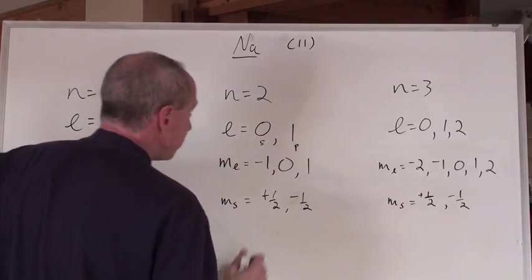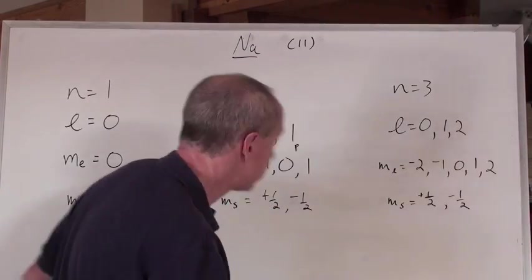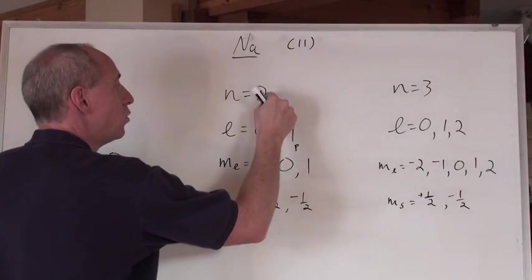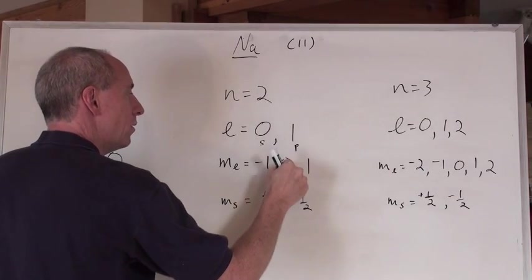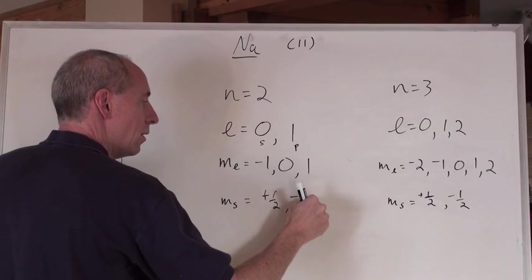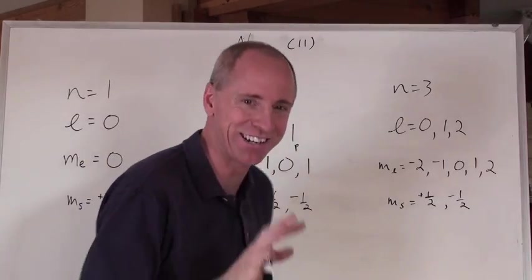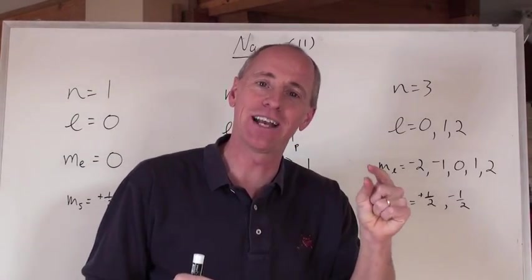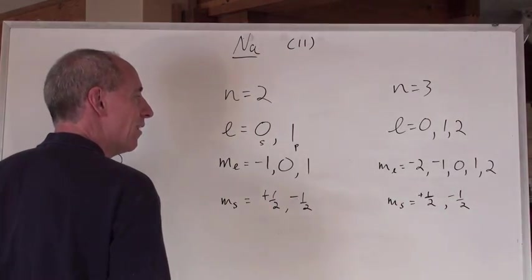Now, watch this. We go two, for the fifth electron, you knew we went two, one, negative one, plus a half. Then we go two, one, zero, plus a half. Two, one, one, plus a half. Right? And what that does is we've now put that plus one-half electrons into each of these three sub-orbitals at the p-level.